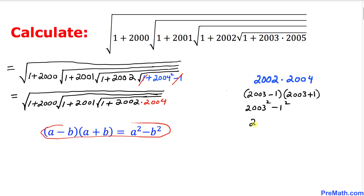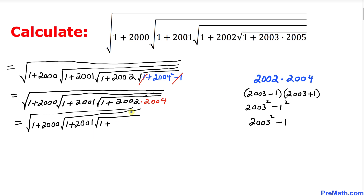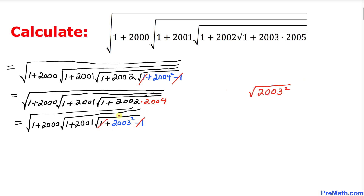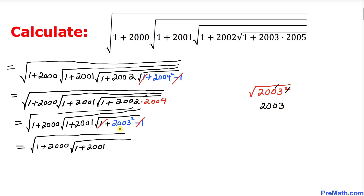So 2002 times 2004 is replaced by 2003² minus 1. The negative one and positive one cancel out, and we're left with square root of 2003 squared. The square and square root undo each other, giving us simply 2003. I replace that part with 2003 and move on.